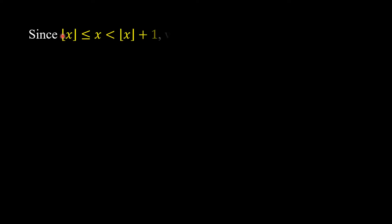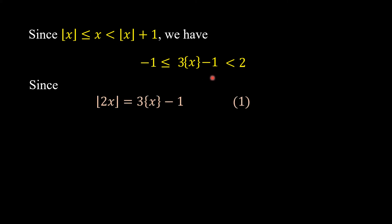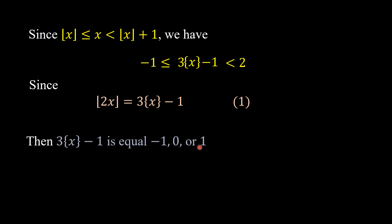First, we consider the possible values of the right-hand side. By the definition of the floor function, we know that floor(x) ≤ x < floor(x) + 1, which means x minus floor(x), i.e., {x}, is between 0 and 1. Multiplying by 3 and subtracting 1, the right-hand side 3·{x} - 1 lies strictly between -1 and 2. Since the right-hand side must be an integer, the only possibilities are -1, 0, or 1.